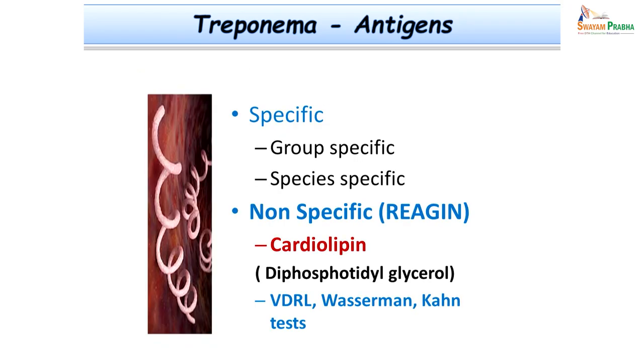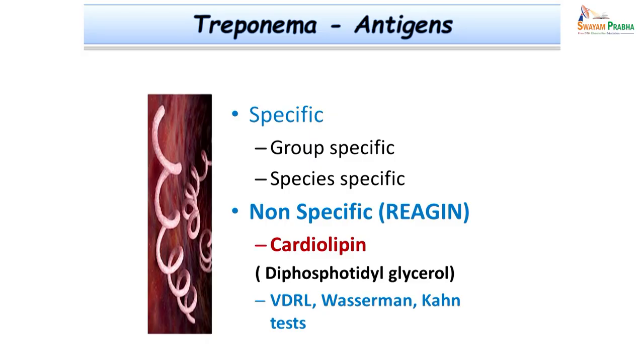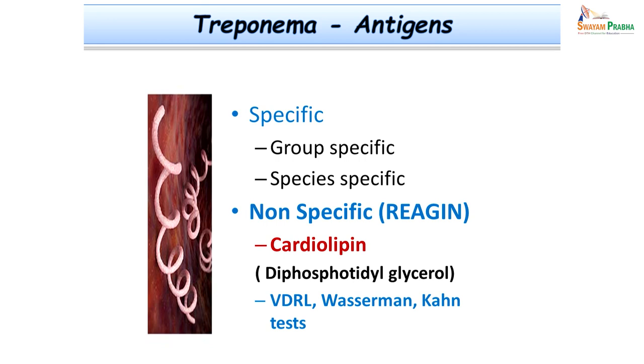Treponemes have very peculiar antigens, divided into specific antigens and non-specific antigens. Non-specific antigens are also called reagin antigens. Such antigens are also found in the heart muscles of mammals. Using this similarity, tests have been devised — such as the VDRL test and the rapid plasma reagin test — to help diagnose the disease rapidly. The reagin antigen, also called cardiolipin antigen, is diphosphatidylglycerol in chemical nature. The specific antigens are of two types: group-specific and species-specific, which are also being explored in benchtop laboratory diagnostic tests.